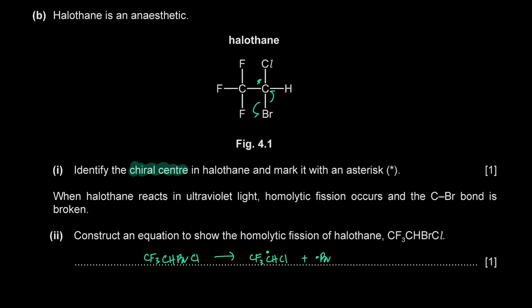The C–Br bond is the weakest in halothane, so it breaks under UV light. The CF, C–Cl, and C–H bonds are relatively stronger. Down the group, as size increases, bond length increases and bond energy decreases, so C–Br breaks preferentially.